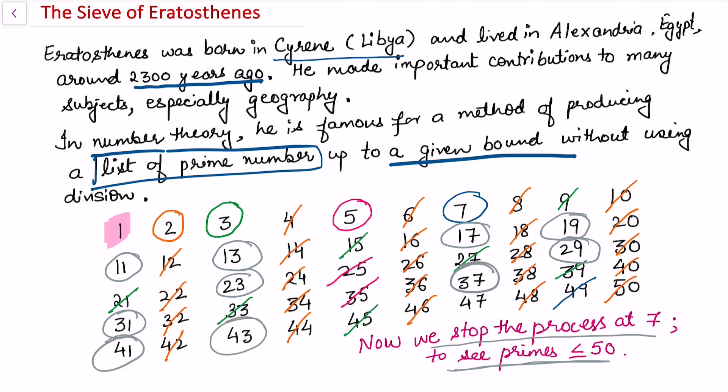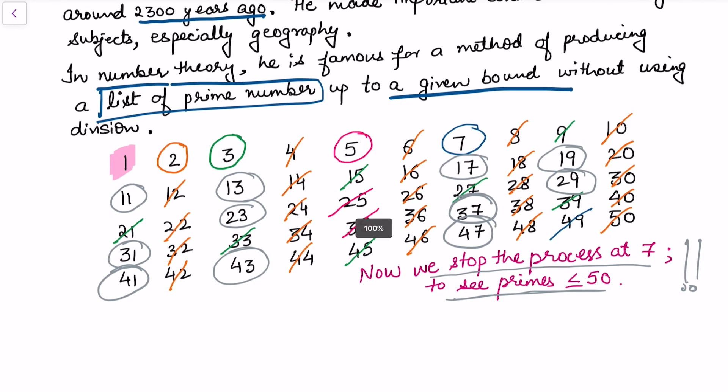Let's see why did I stop at 7 only to see all the primes which are less than or equal to 50.